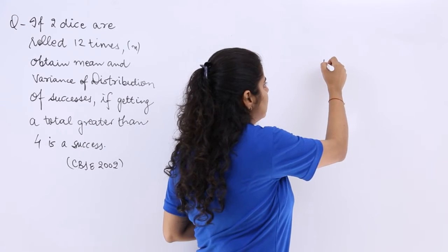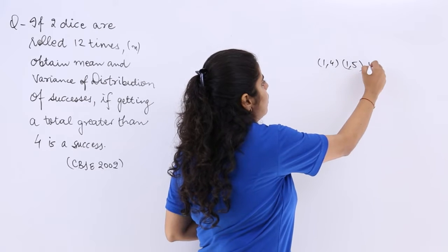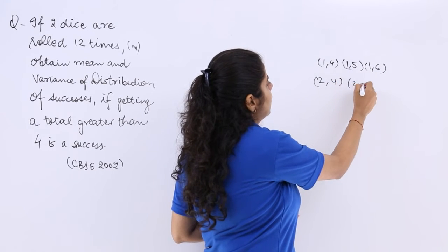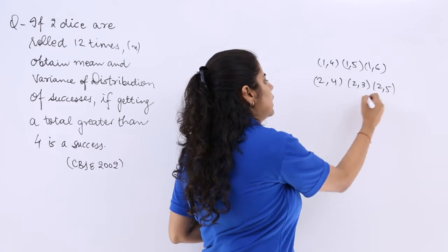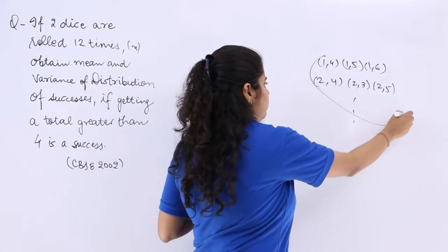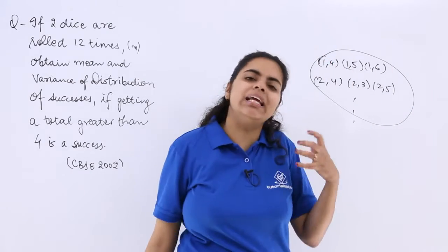Many cases are there like (1,4), (1,5), (1,6), (2,4), (2,5), (2,3), many cases are there. So it will take a long time to count. This methodology is very long, very tedious.